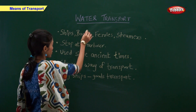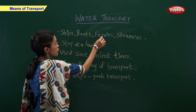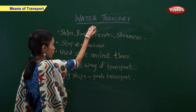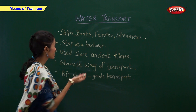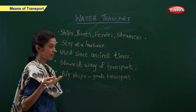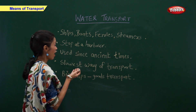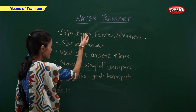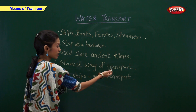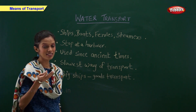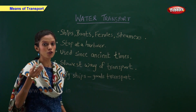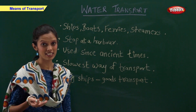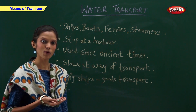Water transport — ships, boats, ferries, and steamers are the examples of water transport. Water vehicles stop at a harbour. Water vehicles have been used since ancient times. These are the slowest way of transport. Big ships are used for goods transport. Now let us have a look at some of the examples of water transport.